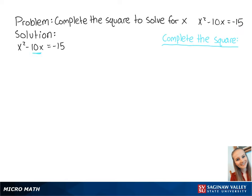To complete the square, we take the coefficient of x and multiply it by 1 half. So we get negative 10 times 1 half equals negative 5.